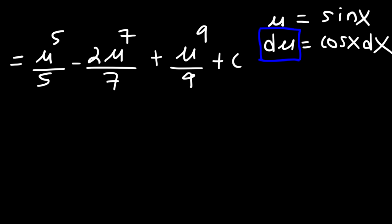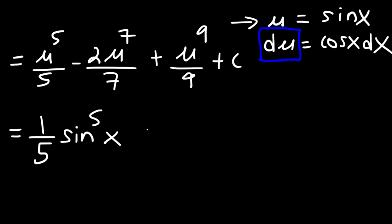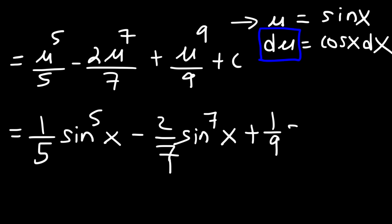Now using the power rule, the antiderivative gives us u to the fifth over 5 minus 2u to the seventh over 7 plus u to the ninth over 9. The last thing we need to do is replace u with sine x. So the final answer is 1/5 sine to the fifth x minus 2/7 sine to the seventh x plus 1/9 sine to the ninth x plus c.